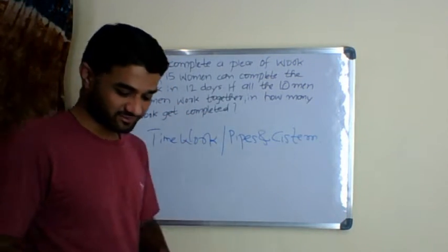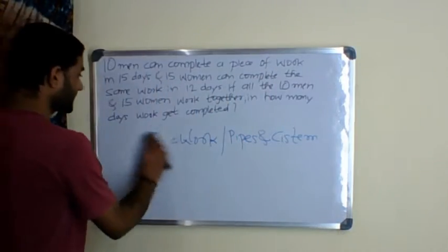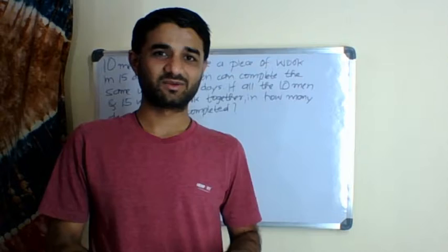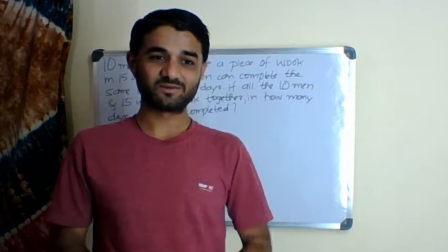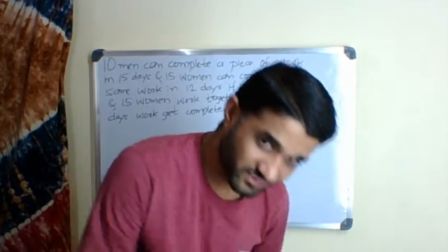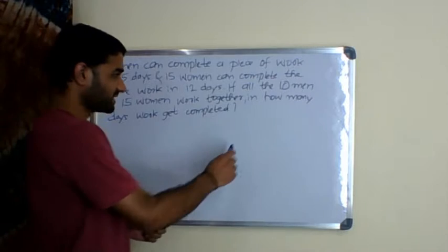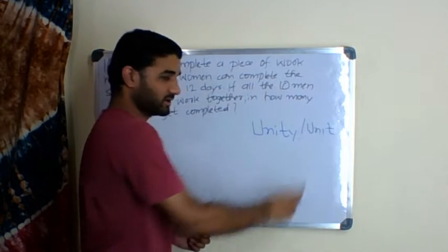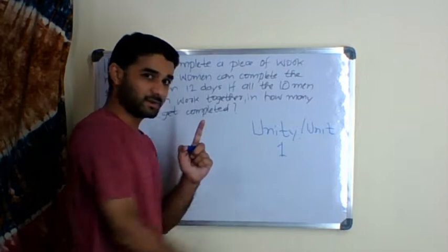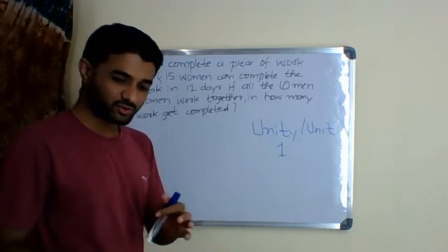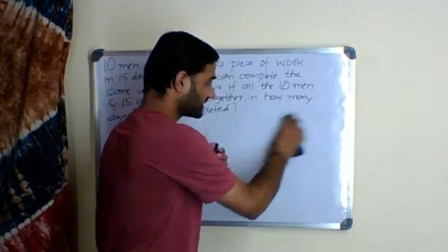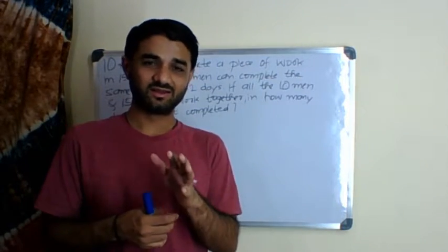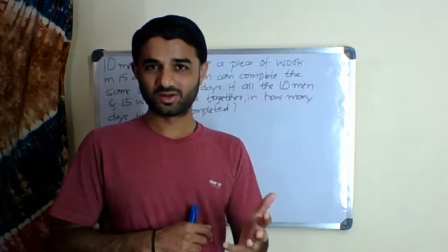We shall see fundamentals of time and work first before taking up problems. Our approach should be the same for any variety. In time and work, remember one thing: unity or unit, which is one. Whatever the given problem is, you need to reduce that time and work problem into something which is of unit quantity - say one day, or one man, one woman, one child, or in case of pipes and cisterns it could be one hour, one minute.